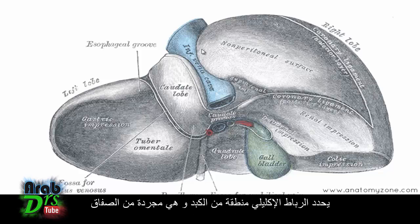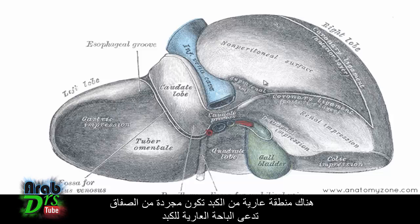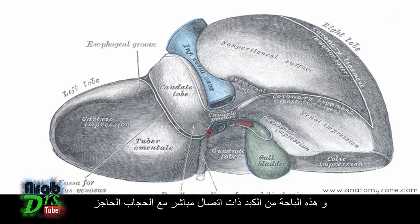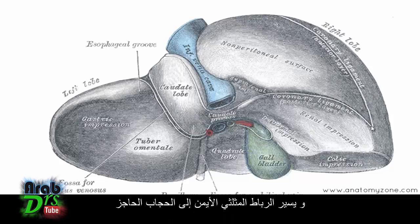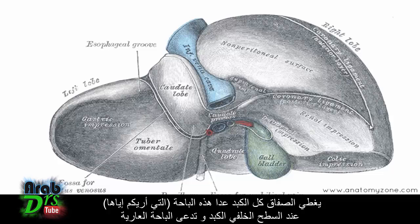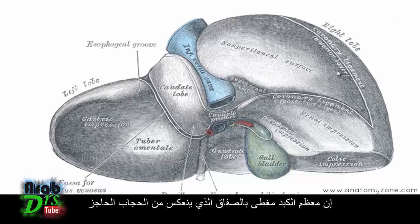This coronary ligament demarcates an area of the liver which is non-peritoneal — there's a bare area on the liver where there is no peritoneum, called the bare area of the liver. This part of the liver is in direct contact with the diaphragm. The right triangular ligament is formed at the lower extremity of the bare area where the two layers of the coronary ligament fuse, and it passes to the diaphragm. The peritoneum covers the whole liver except for this bare area at the back.